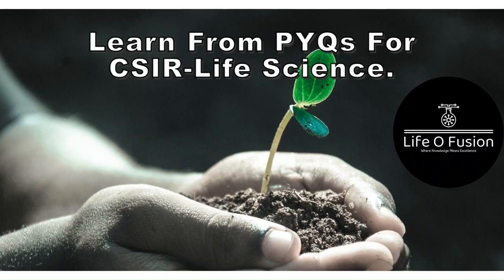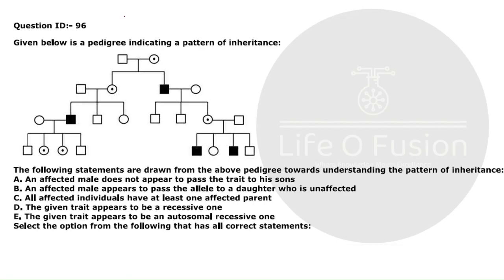Let's begin the first part of this lecture — Learn from PYQs for CSIR Life Sciences. The first question came in 2022. As you can see, this is a pedigree analysis, and based on this pedigree they gave five options — A, B, C, D, E. From these five statements you have to find the correct ones.